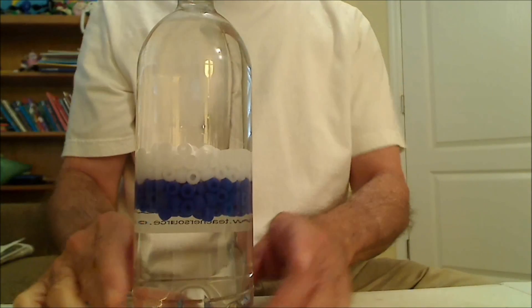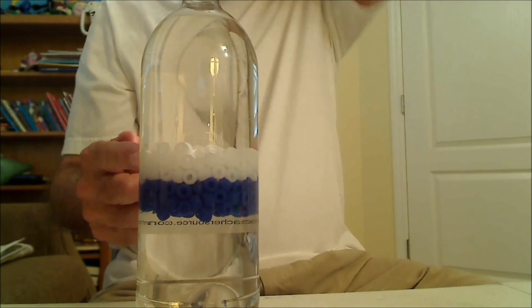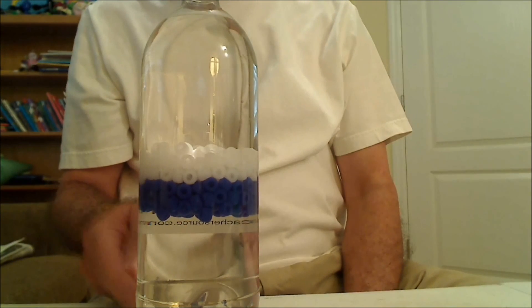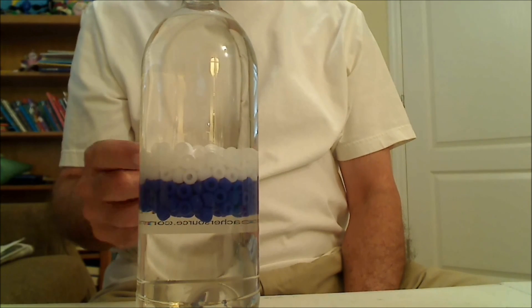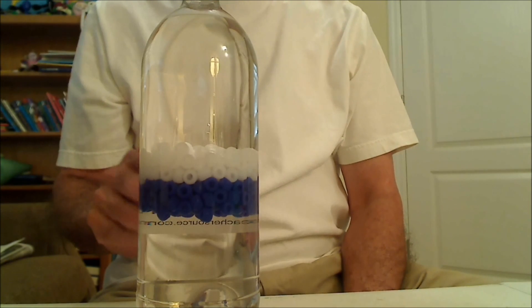So let's get back to our poly density demonstration. We have isopropyl alcohol, low density, salt water, high density. The beads are obviously made of two different kinds of plastic. The white beads have a lower density than the blue beads. The white beads are more dense than the isopropyl alcohol, but less dense than the salty water.